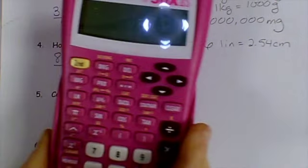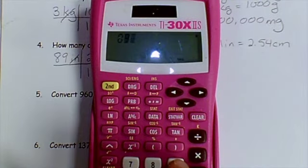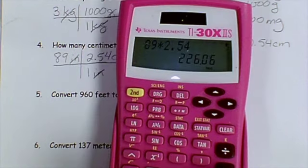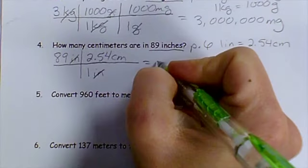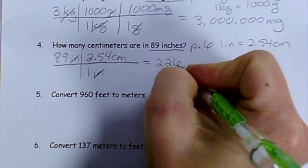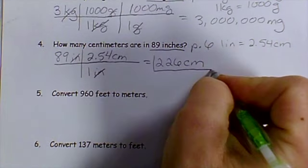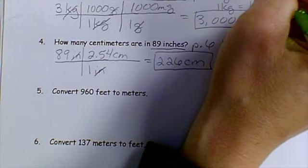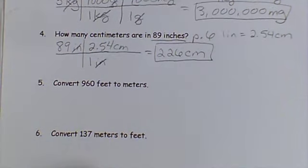I multiply 89 times 2.54, and I get 226.06. I'm going to round that off just to 226 centimeters. And I should be boxing in these answers, shouldn't I? So that it's easy to find that answer. So go back and box in all of your answers.